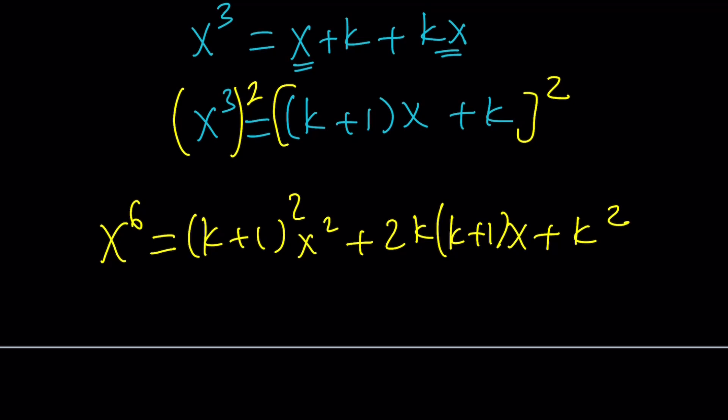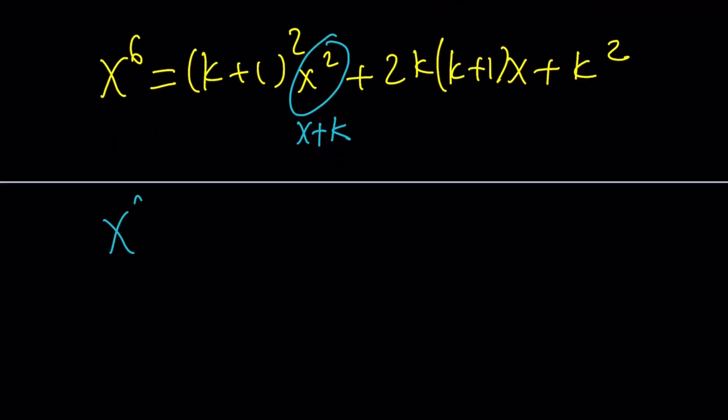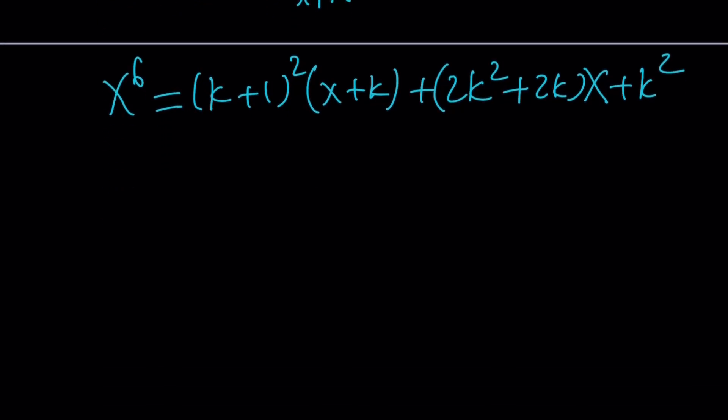This is going to happen a lot. Now we need to replace it with x + k. x^6 equals (k + 1)^2 times (x + k), plus 2k^2 + 2kx. Let's distribute because we're going to combine like terms next. Let's simplify this a little bit more.